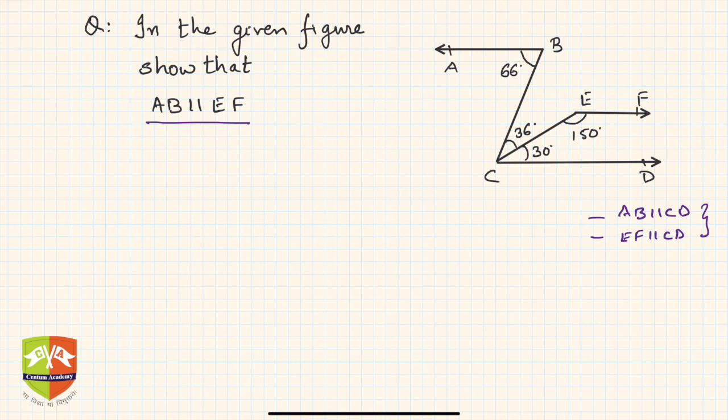Consider AB and CD. If you see, angle ABC is equal to 66 degrees, and angle BCD is also 66 degrees (36 plus 30 equals 66 degrees). Both these are actually alternate interior angles. Hence from this we can say that AB is parallel to CD since alternate interior angles are equal.